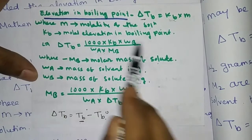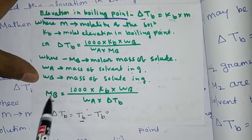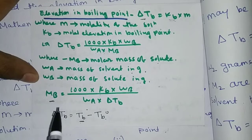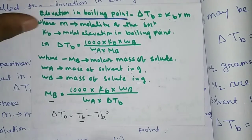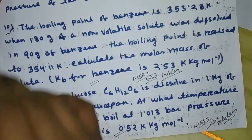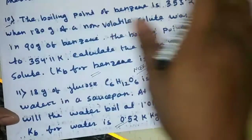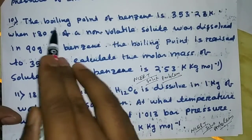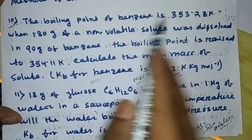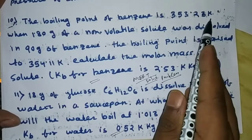I will rearrange this equation to get the molar mass of the solute. Now I will present a problem. The boiling point of benzene is 353.23 Kelvin.